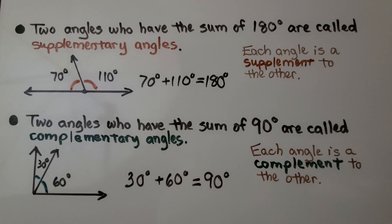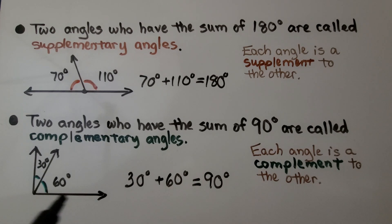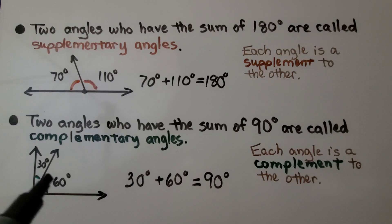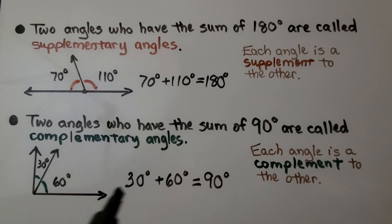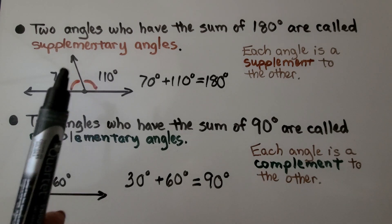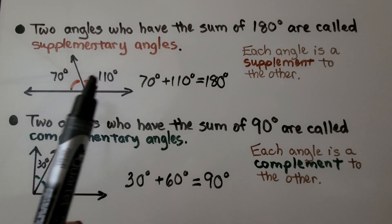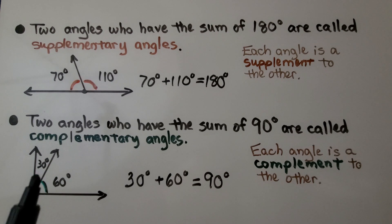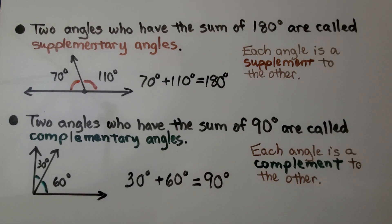Two angles that have the sum of 90 degrees are called complementary angles. We have a right angle here, and if this one is 60 degrees, then this one must be 30 degrees, because together they must equal 90 degrees. Each angle here is a supplement to the other angle, and each angle here is a complement to the other angle.